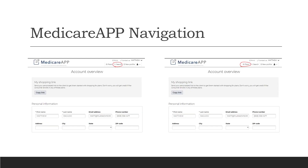This is what the account overview site looks like for Medicare App navigation. If we go to 'search,' we'll go back to that initial landing page we saw at the beginning. If we go to 'plans,' that is where we can search the different plans available.